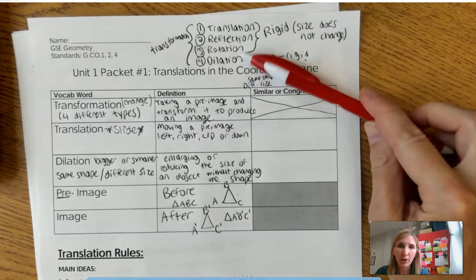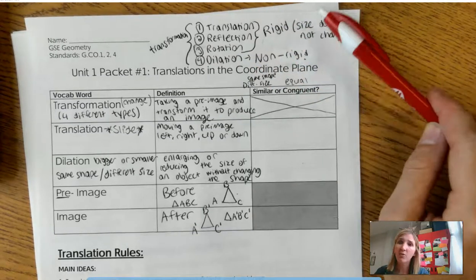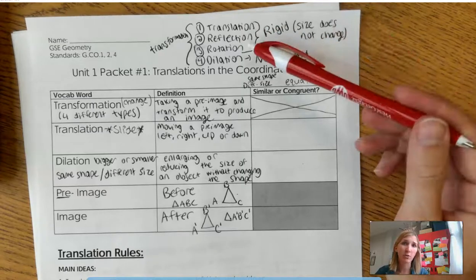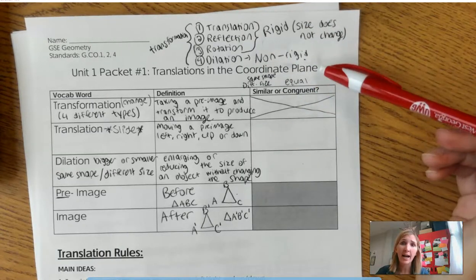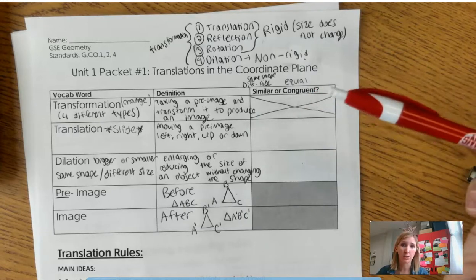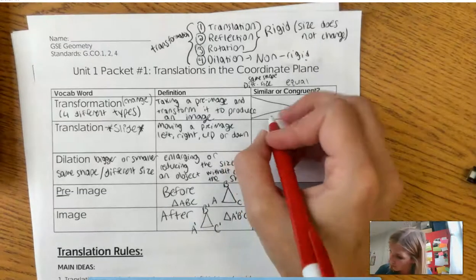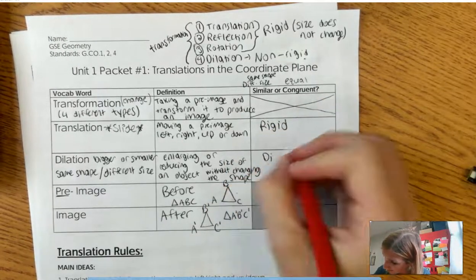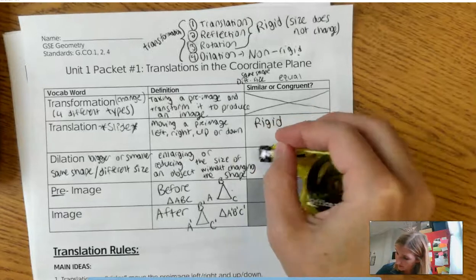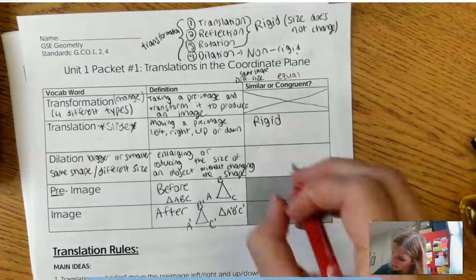So when I say a transformation is rigid, it means the size does not change. So translation, reflection, and rotation, those are all rigid transformations. Dilations are only non-rigid. So I'm going to call translation rigid, and I'm going to call dilation non-rigid.